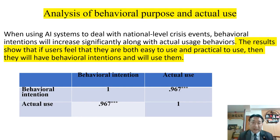H6, analysis of behavioral purpose and actual use. The results show that if users feel that the system is both easy to use and practical, then they will have behavioral intentions and will actually use it. H6 analyzes the use of AI systems.